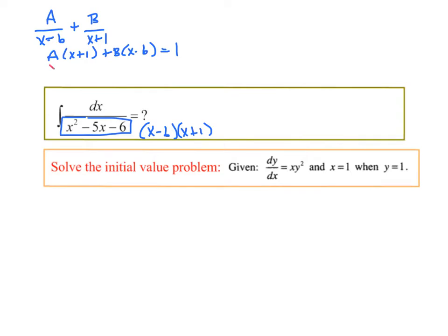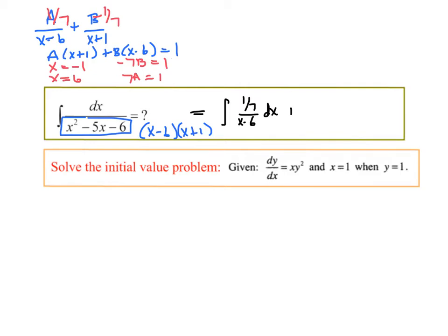If I make x equal to negative 1, to cancel out that first term, I get negative 7b equals 1, so b is negative 1/7. If x were 6, then 7a would be 1, so a is 1/7. So I can rewrite this integral as (1/7) over (x minus 6) dx plus the integral of (negative 1/7) over (x plus 1) dx.